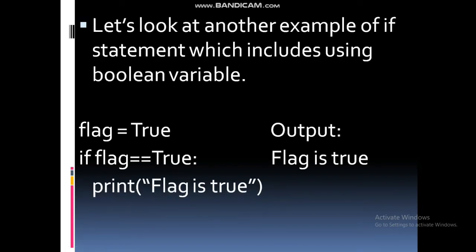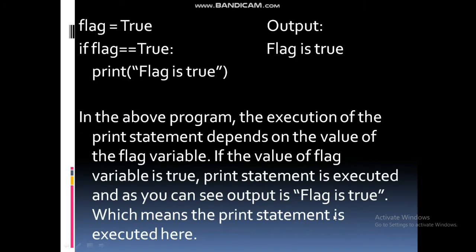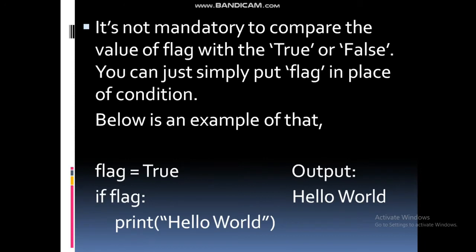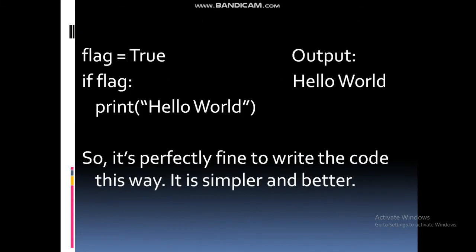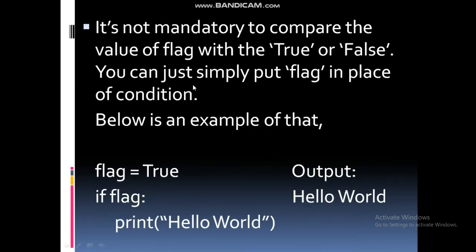Let's look at another example of if statement which includes using a boolean variable. In this program, the execution of the print statement depends on the value of the flag variable. If the value of flag variable is true, the print statement is executed. As you can see, the output is 'flag is true', which means the print statement is executed. It's not mandatory to compare the value of flag with true or false — you can simply put flag in place of the condition. It is simpler and better.